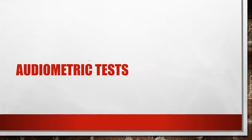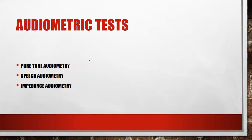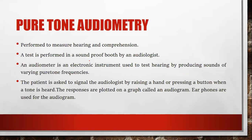The next is the audiometric test, mainly divided into three forms: pure tone audiometry, speech audiometry, and impedance audiometry. Pure tone audiometry is mainly performed to measure hearing comprehension ability and is performed in a soundproof booth or room by an audiologist. An audiometer is an electronic instrument used to test hearing by producing sounds of varying pure tone frequencies. The patient is asked to signal the audiologist by raising their hand or pressing a button when a tone is heard, and the responses are plotted on a graph called an audiogram.